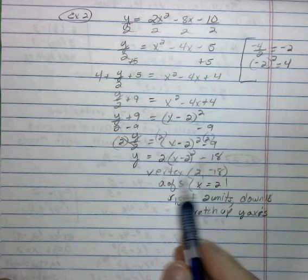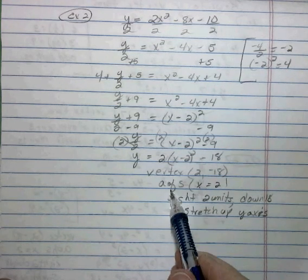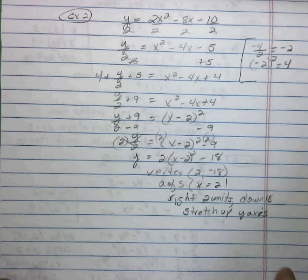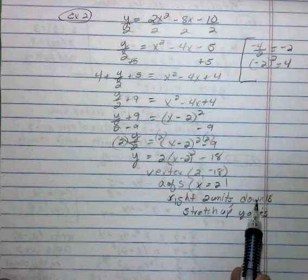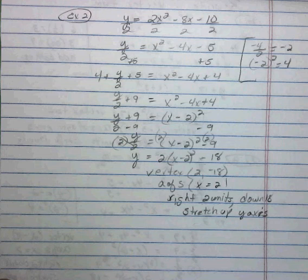So our vertex, 2, negative 18, axis of symmetry at x equals 2. We're going to be moving right 2 units and down 18 with our stretch.